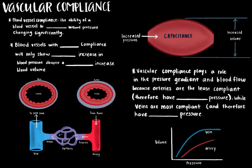One final factor that affects the pressure gradient is blood vessel compliance, which is the ability of a blood vessel to stretch without pressure changing significantly. Blood vessels with high compliance will show only a small increase in blood pressure despite a large increase in blood volume, because of the low amount of smooth musculature in their vessel walls — so these vessels are highly flexible. For example, veins have thinner walls compared to arteries. In blood vessels with low compliance, a small increase in blood volume causes a large increase in blood pressure, because these vessels have a relatively high amount of smooth musculature and cannot stretch as much to accommodate the blood volume increase. For example, arteries have a high amount of smooth musculature.